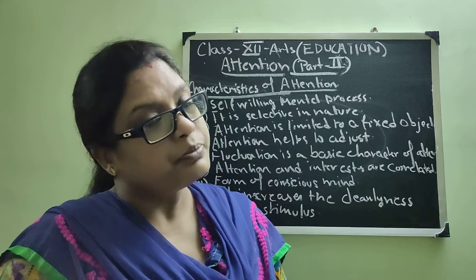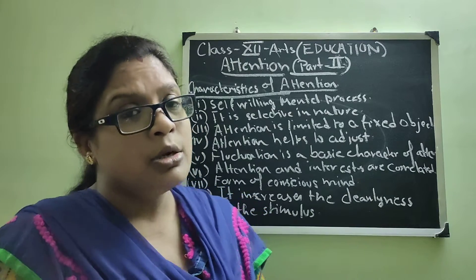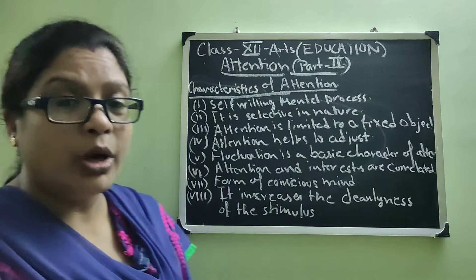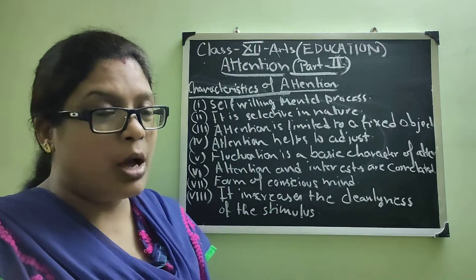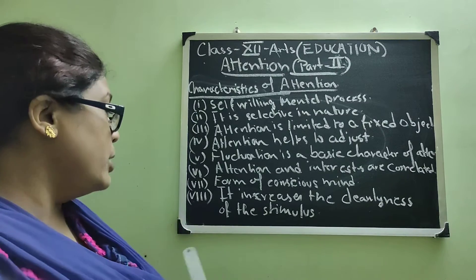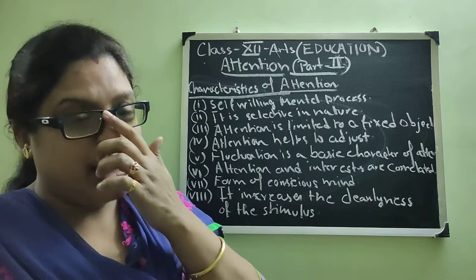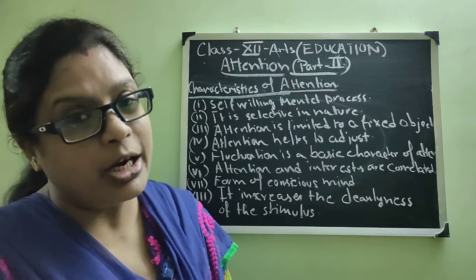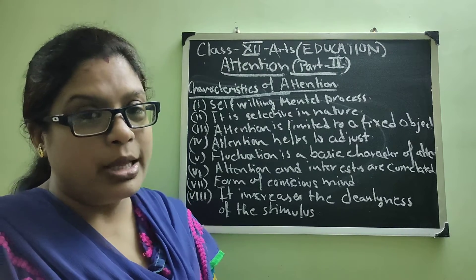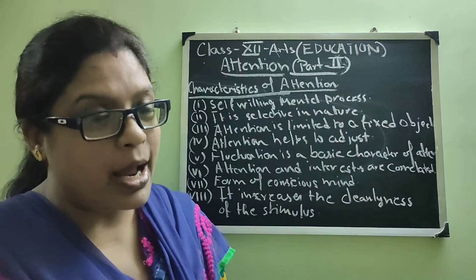This topic can come for 4 to 6 marks. For 6 marks, you are quite grown up now, so you have to write minimum 6 to 7 points, and it will be better if you write all 8 points. Try to learn by heart.